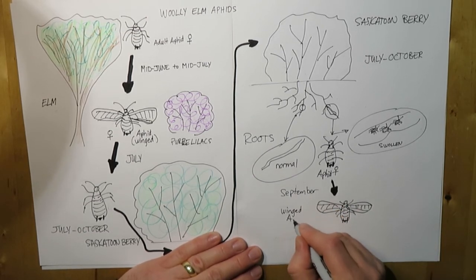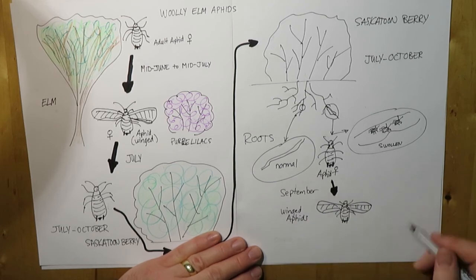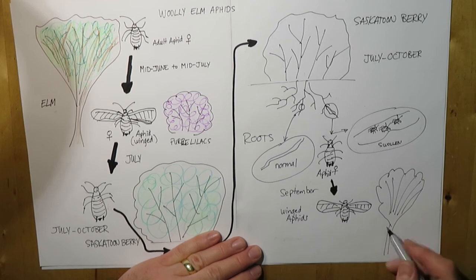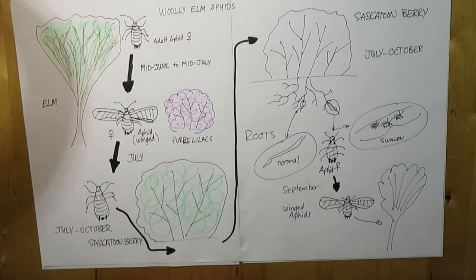At this point in September, they'll develop a winged aphid form, which will now fly back to go back to the elm host. And there it'll overwinter.